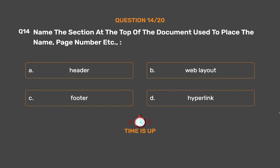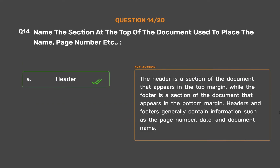The correct answer is Option A: Header. The header is a section of the document that appears in the top margin, while the footer appears in the bottom margin. Headers and footers generally contain information such as the page number, date, and document name.